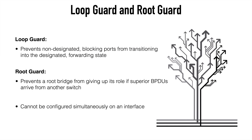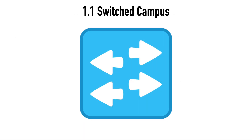To sum things up: under normal operations, when a non-designated blocking port stops receiving BPDUs, it will transition to a designated forwarding state. Loop Guard stops this from happening, protecting against network loops. Also under normal operations, if a root bridge receives a superior BPDU from another switch, it will transition its designated ports and give up the root bridge role. Root Guard prevents this from happening, ensuring the desired root bridge remains in place. Note that Loop Guard and Root Guard cannot be configured simultaneously on the same interface.